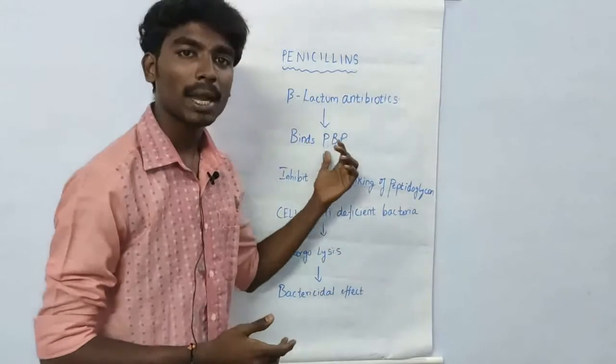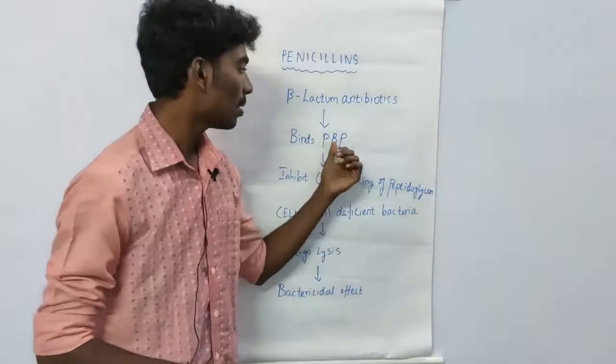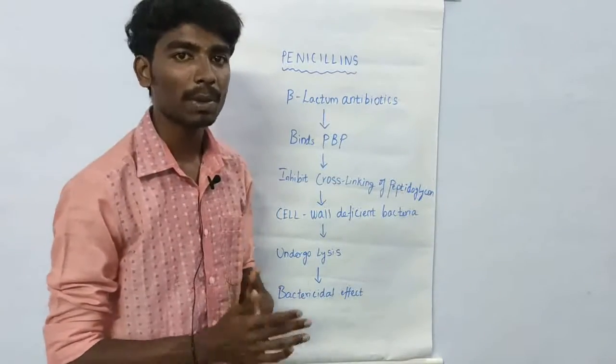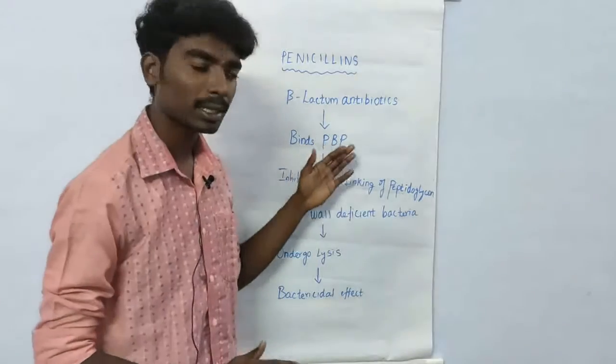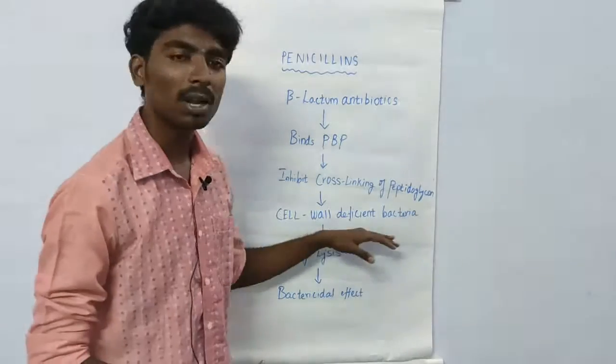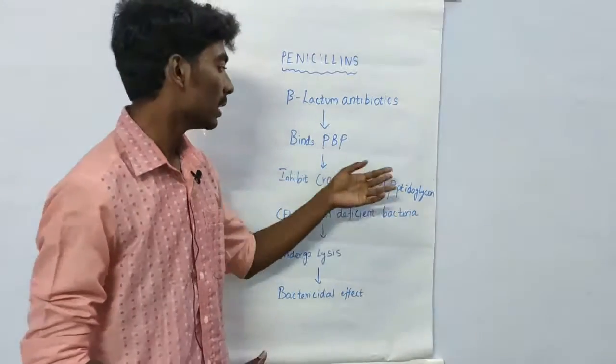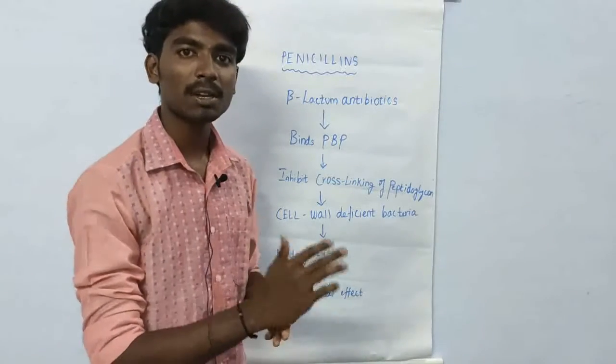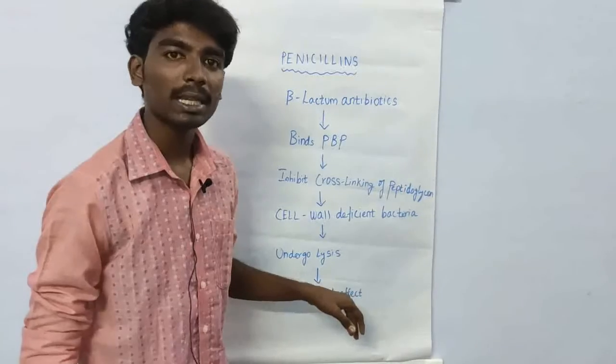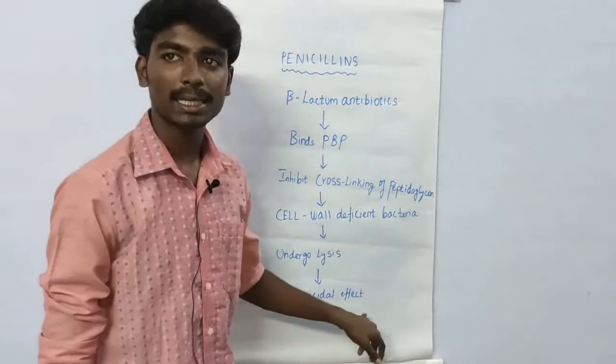That is the binding protein, penicillin binding protein. Next is the binding protein. Peptidoglycan crosslinking is inhibited. In this, the cell wall deficient bacteria, so the link is inhibited, cell wall deficient bacteria. That is why cell bacteria is lysed. Lysis is produced by bactericidal effect.